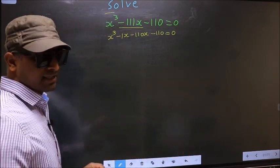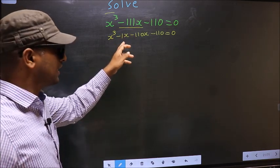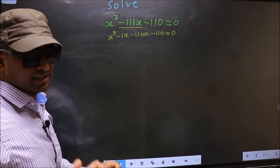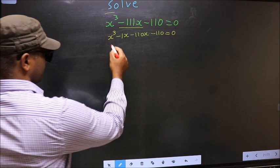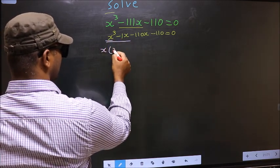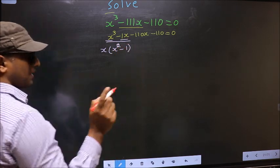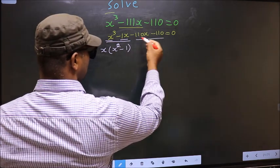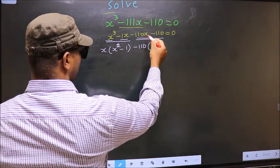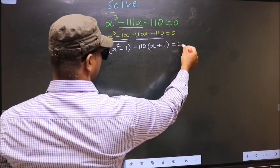In place of -111x I have written -1x - 110x. Now from these two terms, what can be taken out common is x. So here you get x² - 1. From these two terms what can be taken out common is -110. Here you get x and here plus 1, equal to zero.